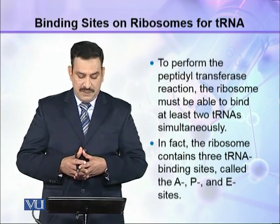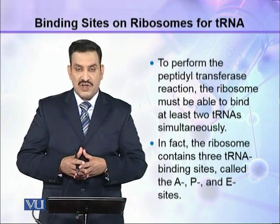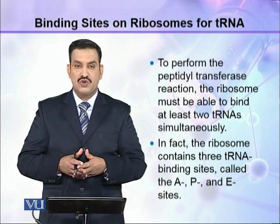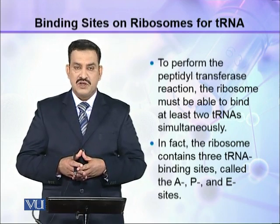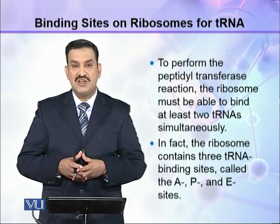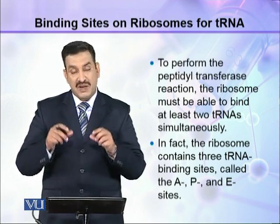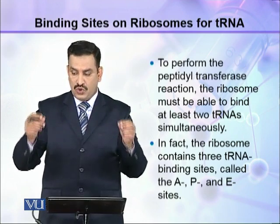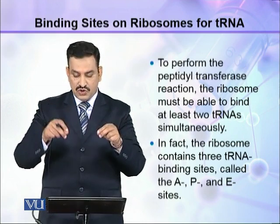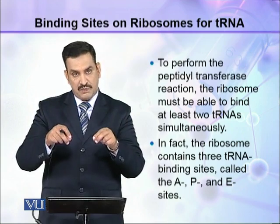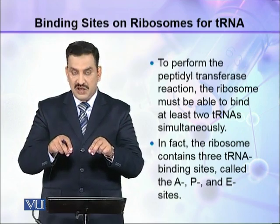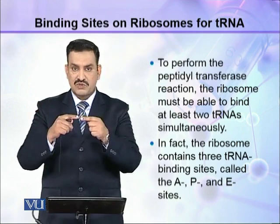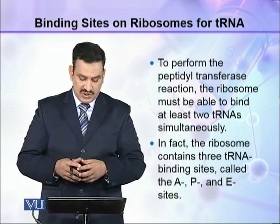To perform the peptidyl transferase reaction, the ribosome must be able to bind to at least two tRNAs simultaneously. ایک ہی وقت میں دو tRNA جو ہیں، وہ ribosome کے ساتھ آکے bind کرنے چاہیے، پھر ہی یہ جو amino acids ہیں یہ آپس میں link ہو سکتے ہیں۔